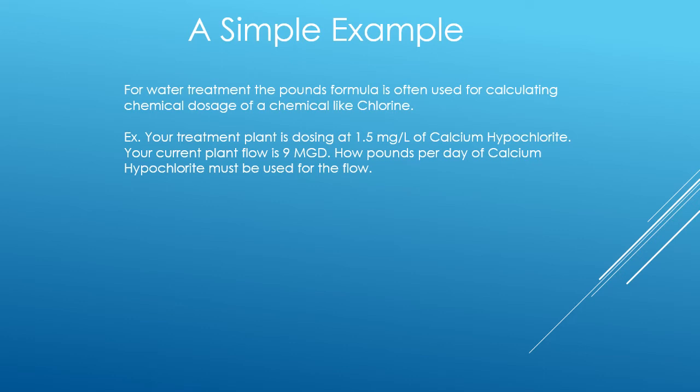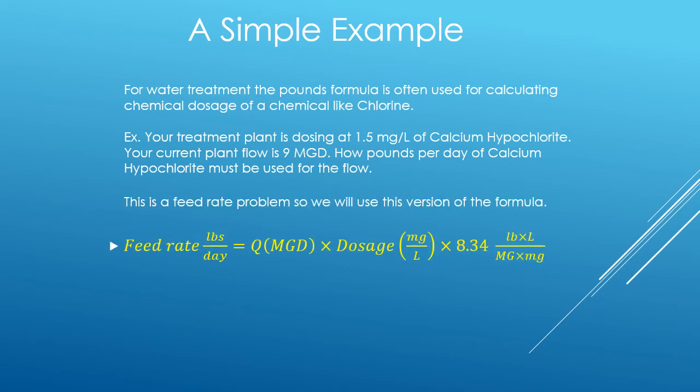Here's the example: Your treatment plant is dosing at 1.5 milligrams per liter of calcium hypochlorite. Your current plant flow is 9 MGD. We want to know how many pounds per day of calcium hypochlorite must be used for the flow.